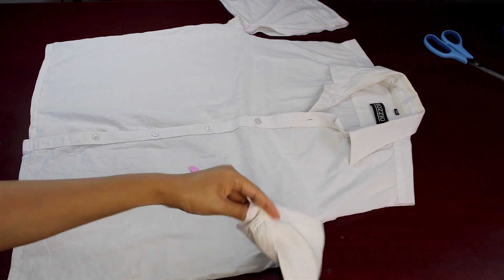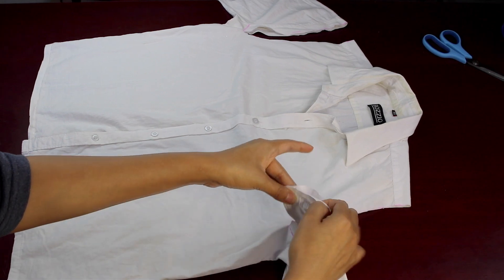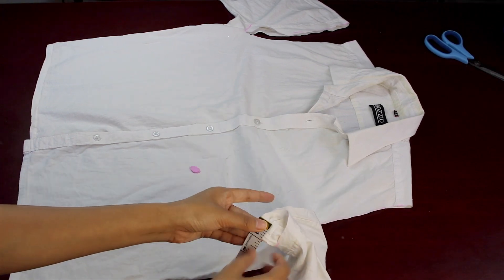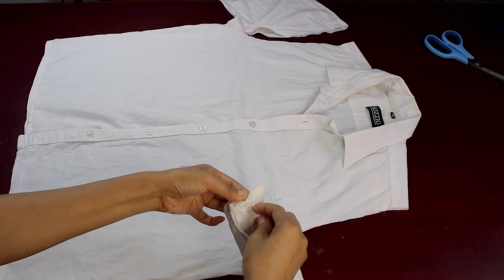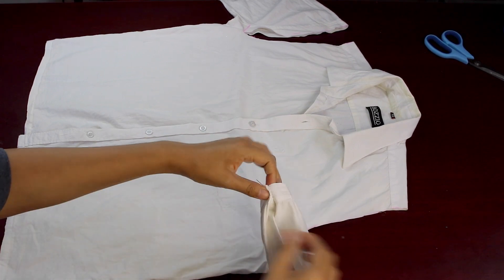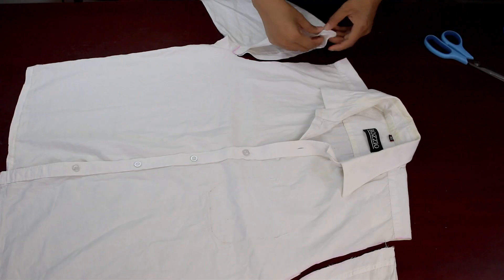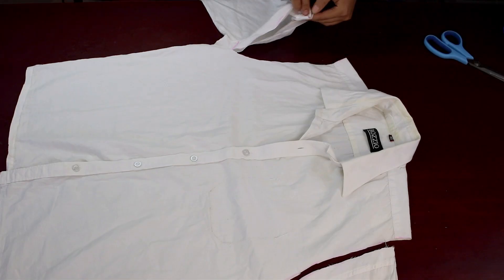Folding the sleeve near the shoulder seam line, I'm keeping one inch and adding a pin, and going to do a straight stitch. This is going to create the puffy gathering we need for the sleeves. And going to do the same for the other sleeve.